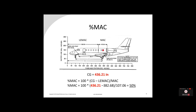Using a Citation Latitude as an example: a point at 436.21 inches from the datum calculates to 50% MAC — halfway between leading and trailing edge — and 409.45 inches calculates to 25% MAC, a quarter of the way back. Percent MAC expresses CG in relation to the wing, whereas CG in inches is the distance from the CG to the datum.